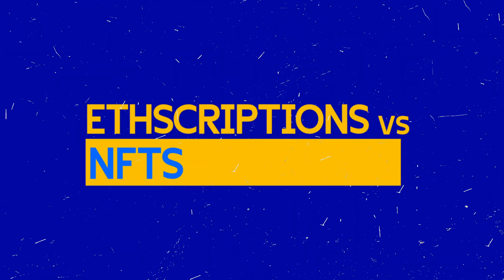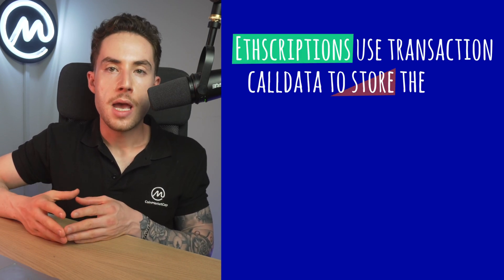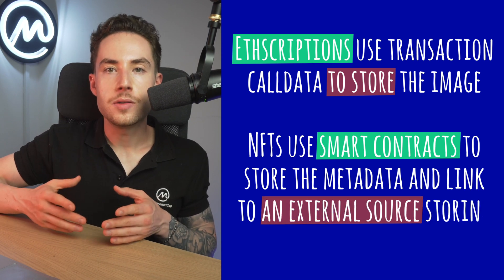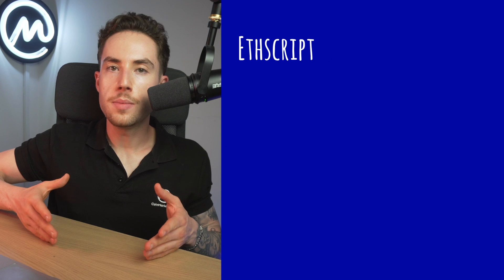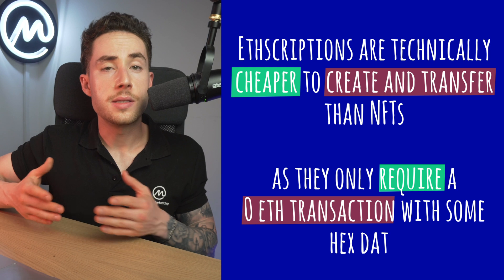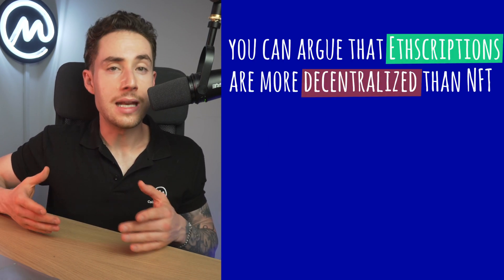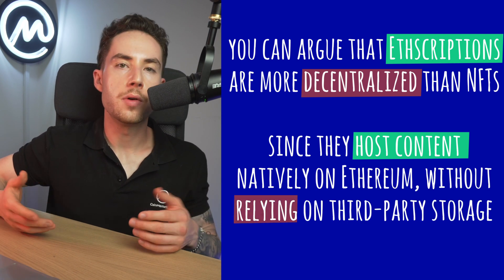ETHSCRIPTIONS versus NFTs: the key difference is that ETHSCRIPTIONS use transaction call data to store the image, while NFTs use smart contracts to store the metadata and link to an external source storing the content. ETHSCRIPTIONS are technically cheaper to create and transfer than NFTs, as they only require a zero ETH transaction with some hex data. You can also argue that ETHSCRIPTIONS are more decentralized than NFTs, since they host content natively on Ethereum without relying on third-party storage.